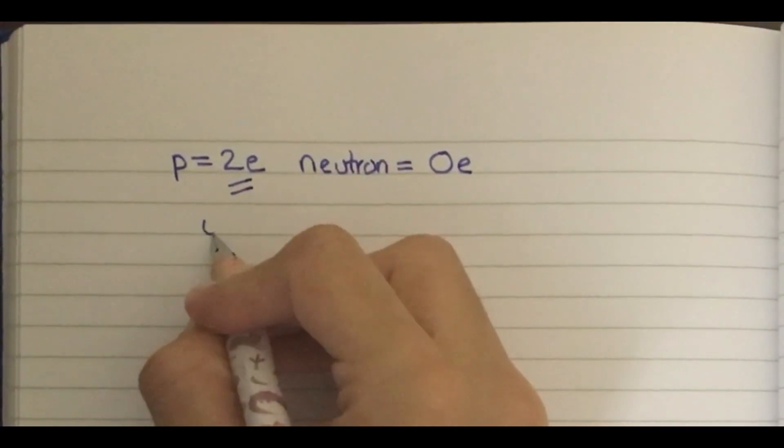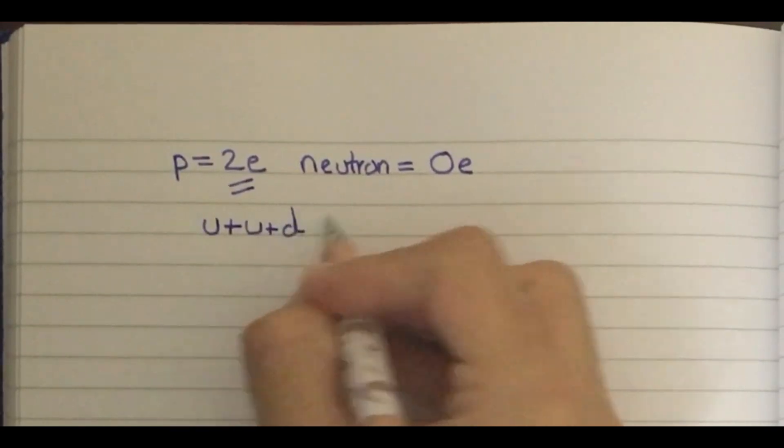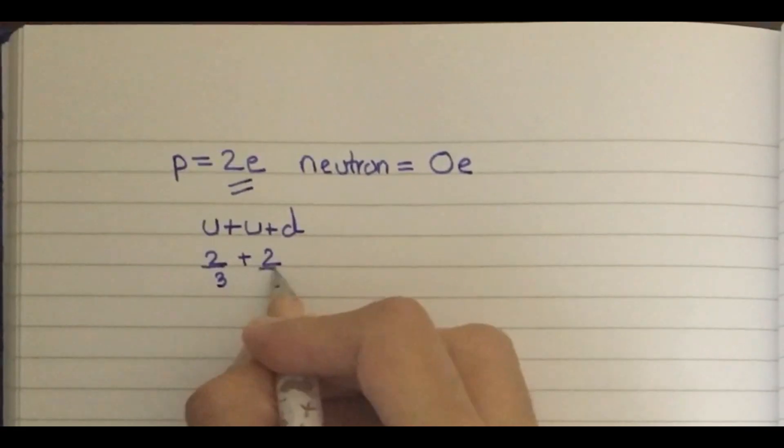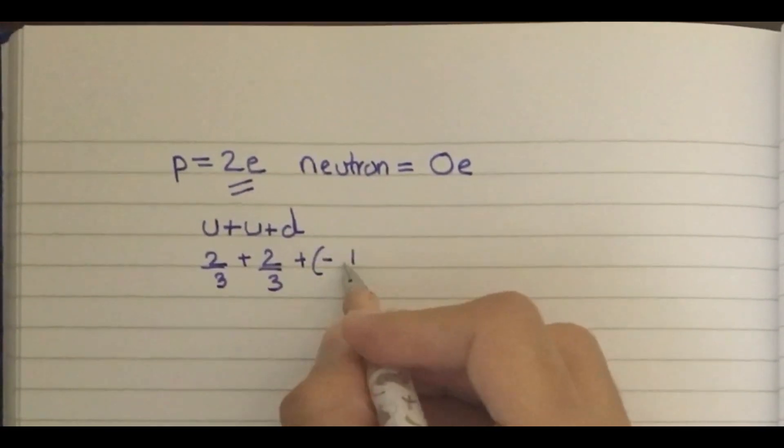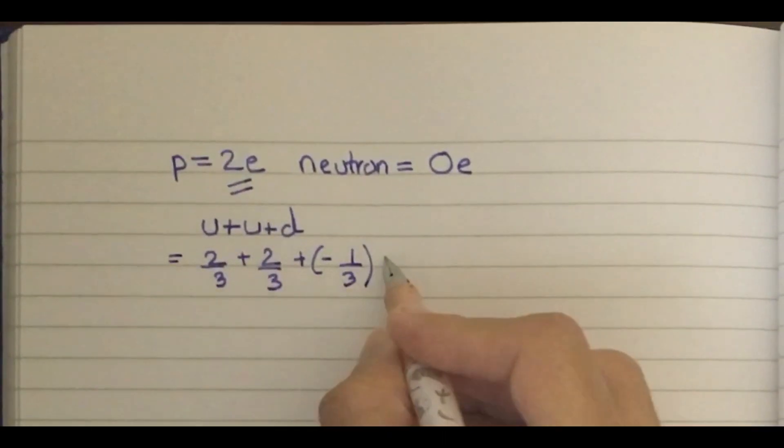So u + u + d: u is 2/3, plus 2/3 for the second u, and d is -1/3. If you calculate this, you will get 2e.